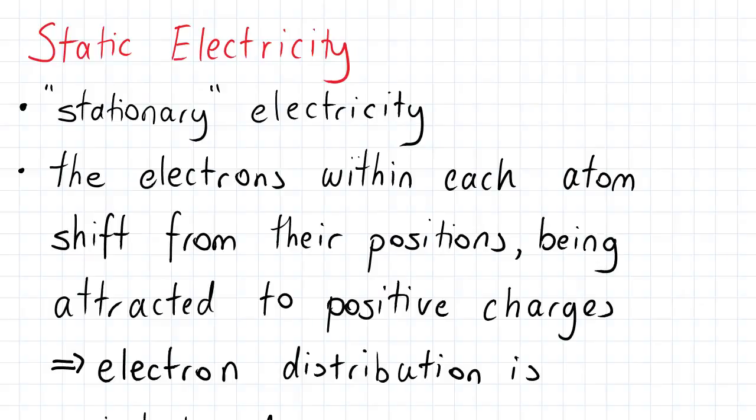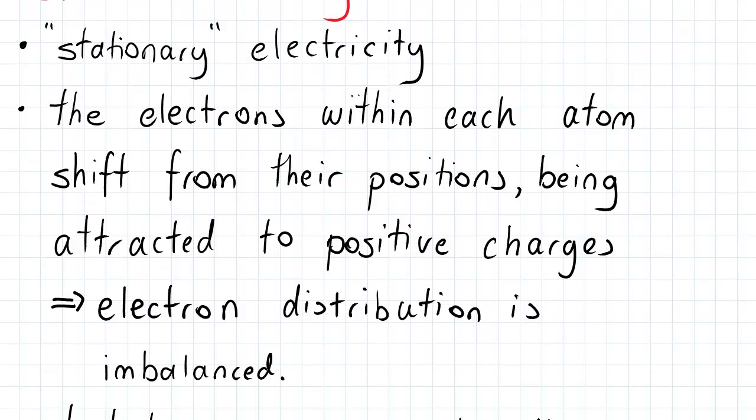Basically, the electrons within each atom shift from their position and are attracted to the positive charges. So as a result of these electrons being shifted and attracted altogether to the positive charges, that means that there is an imbalance in the electron distribution.